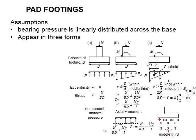When the base is separated into three equal parts, the middle one-third is known as the middle third. The eccentricity is measured from the centroid of the base.